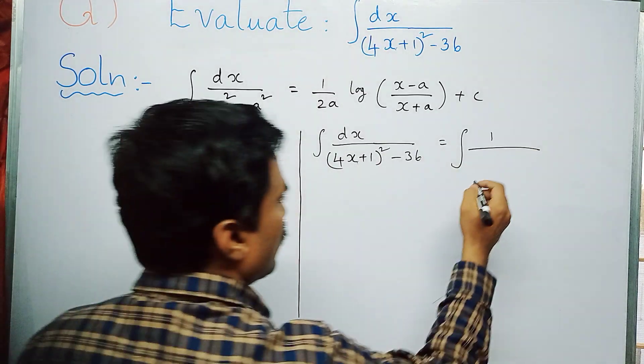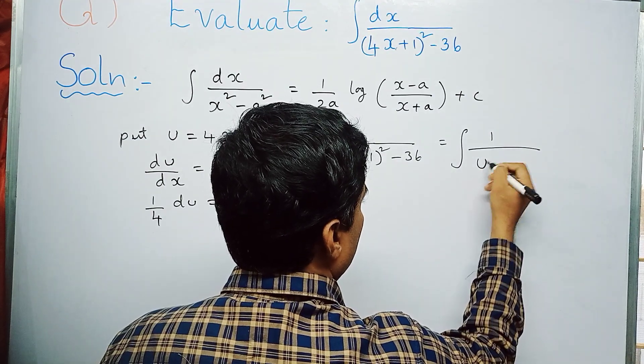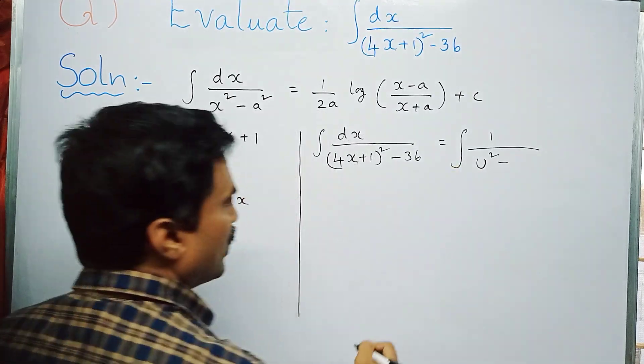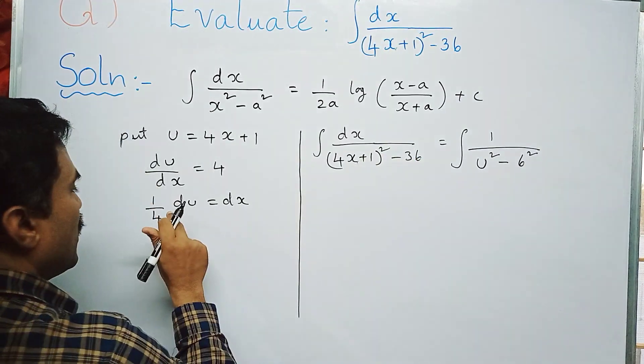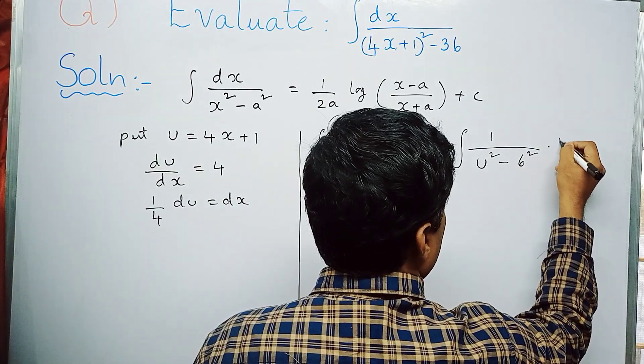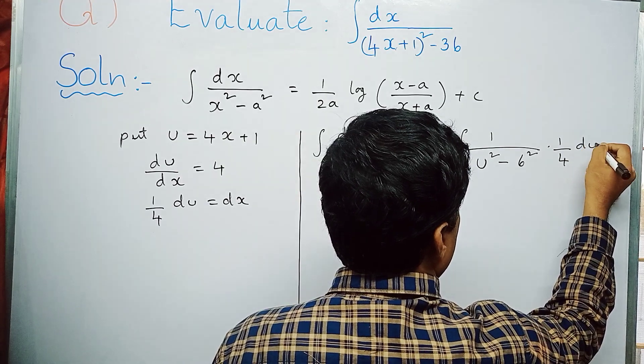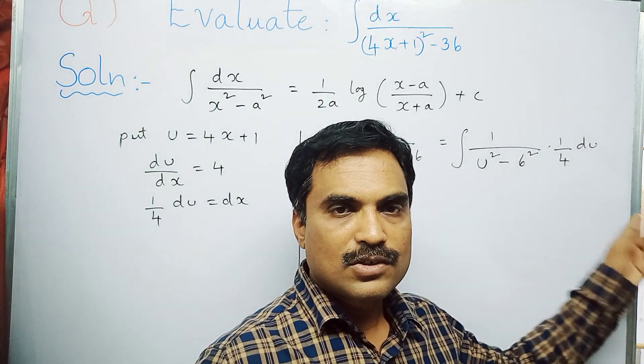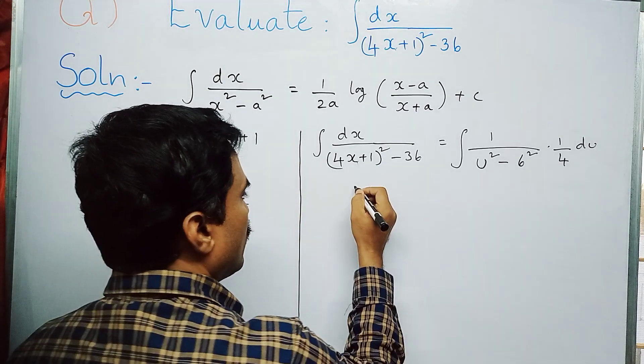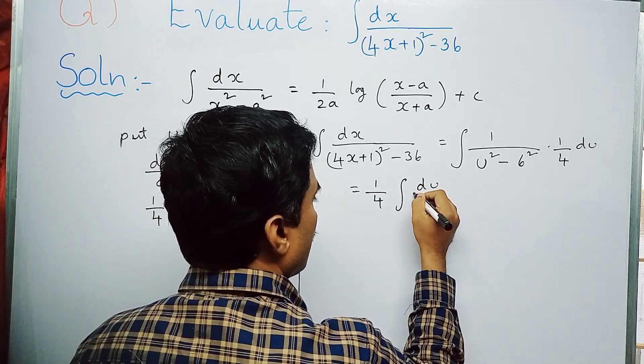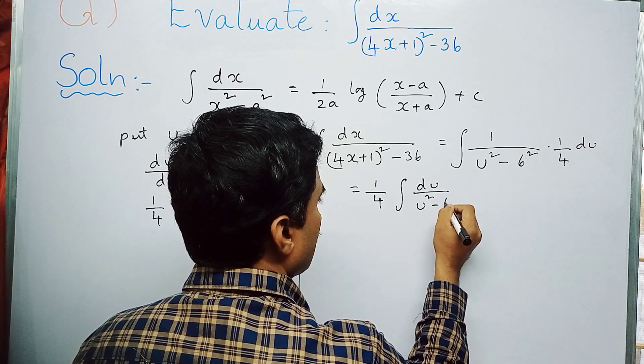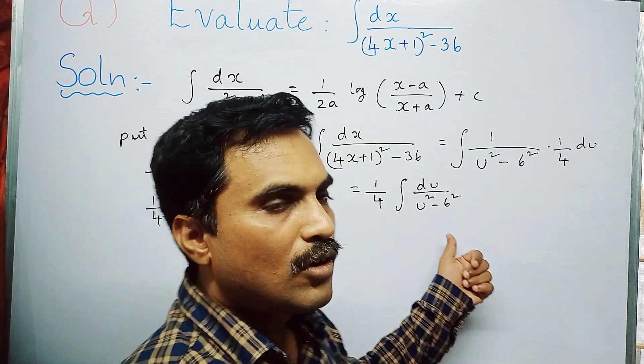I can write 4x + 1 as u, so you can write this as u² - 36, which can be written in terms of square, that is 6². Now dx is nothing but 1 by 4 times du. Take 1 by 4 out of the integral since it's a constant, so you get 1 by 4 integral du by u² - 6².